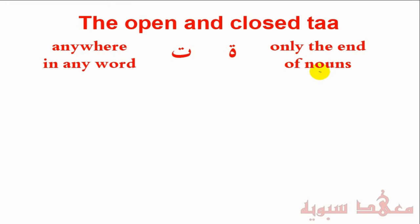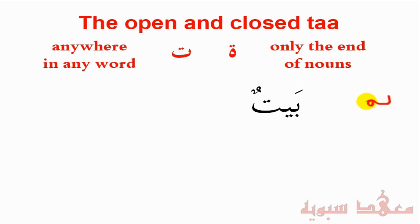So let's look at some examples. Here we have the word bait — baitun — this is the tanween, and this is an open tā'. We also have the word tamrun, which means dates.